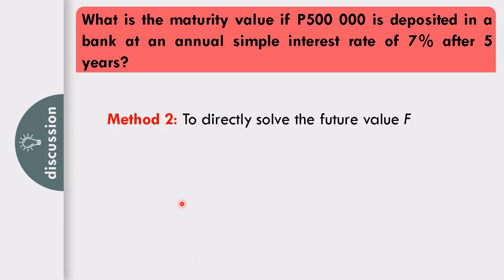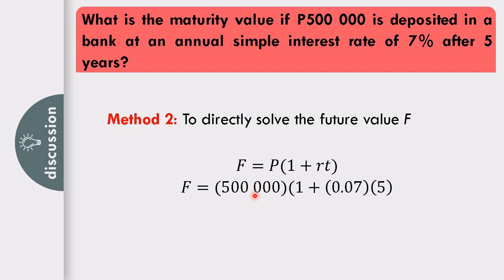Method 2: directly solve the future value using F equals P times 1 plus RT. Substituting 500,000 times 1 plus 0.07 times 5 also gives P675,000. Either method works. Method 1 computes interest first then adds to principal, while Method 2 directly solves F using the combined formula.